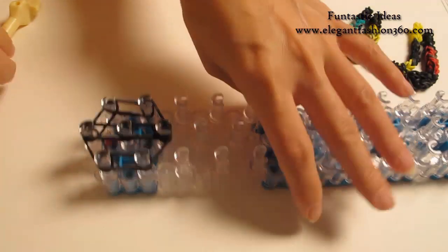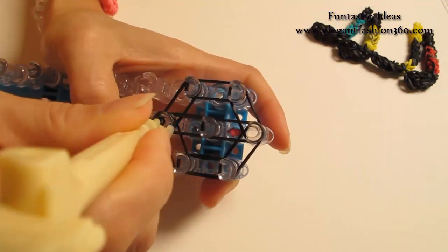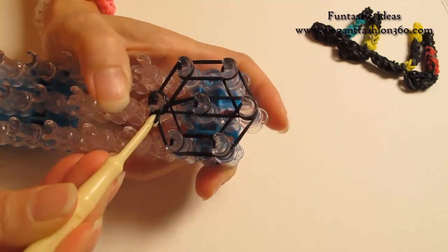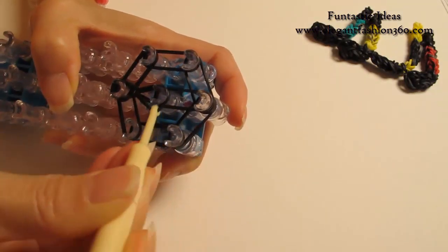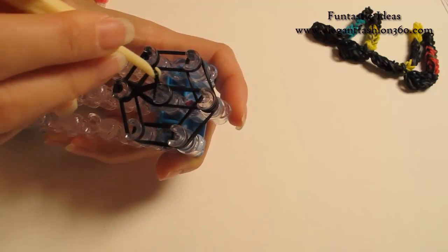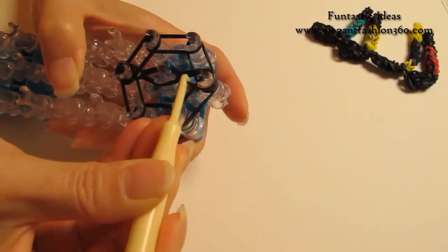And now we're going to rotate our loom and start looping. Reach under the cap band, grab the first two, hook it to the next one on the center here. And then grab the bottom two, hook it to the next one on the center.